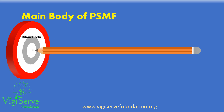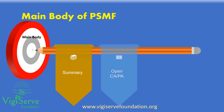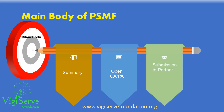The main body is the heart of the PSMF, and the most important section too. It should include a summary of the pharmacovigilance system with appropriate reference to the annexures. One needs to include the open corrective and preventive actions associated with major or critical observations and deviations. Once the actions are completed, this information can be pushed to the logbook of the pharmacovigilance system document. Many marketing authorization holders prefer to share only the main body when requested by a business partner or during due diligence processes.